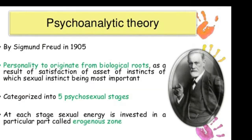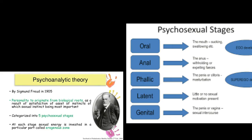Freud proposed that psychological development in children takes place during five psychosexual stages: oral, anal, phallic, latency, and genital. They are called psychosexual stages because each stage represents the fixation of libido, roughly translated as sexual drives, on a different area of the body. As a person grows physically, certain areas of their body become important as a source of potential frustration — erogenous zones — pleasure or both.